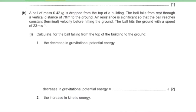Part B: a ball of mass 0.42 kg is dropped from rest and falls 78 m. Air resistance is significant, so acceleration is not simply 9.81 m/s². The ball reaches terminal velocity before hitting the ground, striking at 23 m/s.